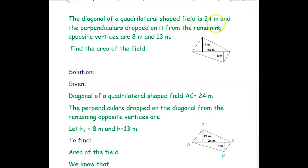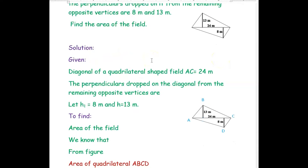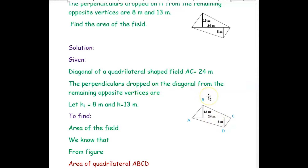The first example: the diagonal of a quadrilateral-shaped field is 24 meters and the perpendiculars dropped on it from the remaining opposite vertices are 8 meters and 13 meters. Find the area of the field. I have named the quadrilateral as A, B, C, D and the diagonal is AC, which is given as 24 meters.